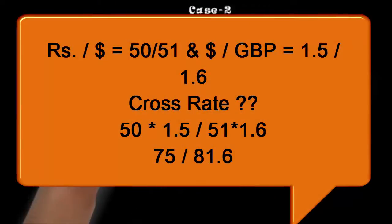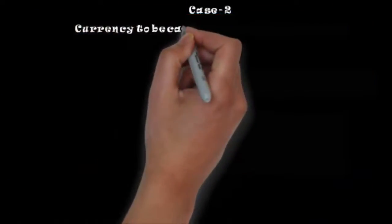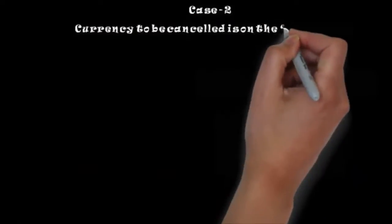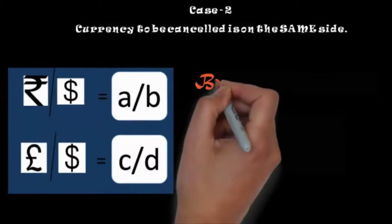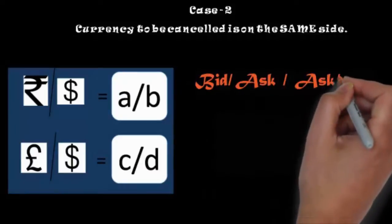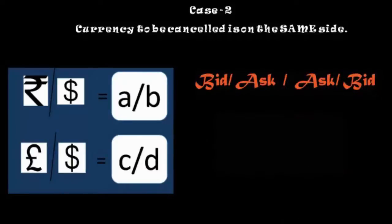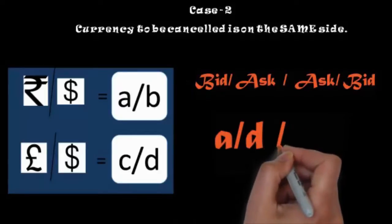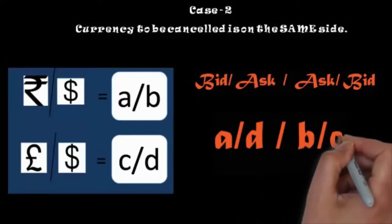Now Case 2, when the currency to be cancelled is on the same side. Now look at this picture. In this picture, you can find that the rate in both cases is given of the dollar. We need to cancel it. So the formula is bid by ask by bid. So it gives us an equation that is A by T by P by C.